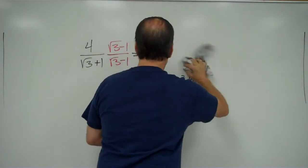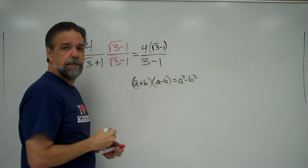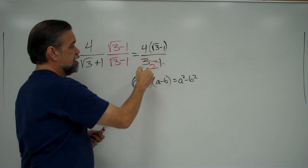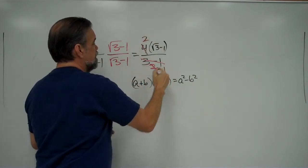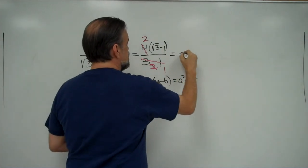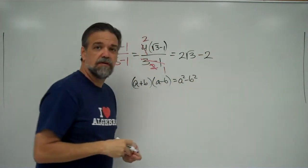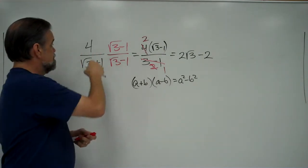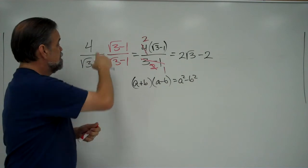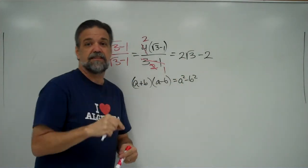In my numerator I have 4 times the square root of 3 minus 1. In the denominator, 3 minus 1 is just 2. Now I have 4 divided by 2, and both are even, so I simplify to get 2 times the square root of 3 minus 1, and distributing the 2 gives 2 times the square root of 3 minus 2. Go ahead and check it on the calculator — divide 4 by the square root of 3 plus 1 (in parentheses), then compute 2 times the square root of 3 minus 2, and you'll see they give exactly the same number.